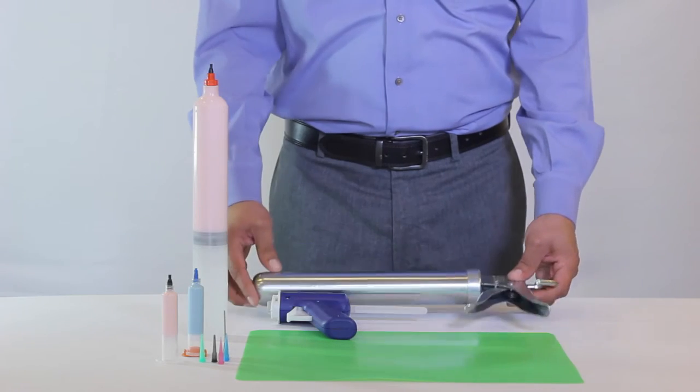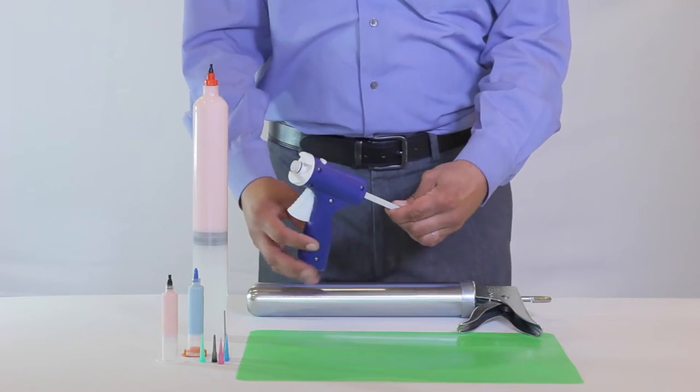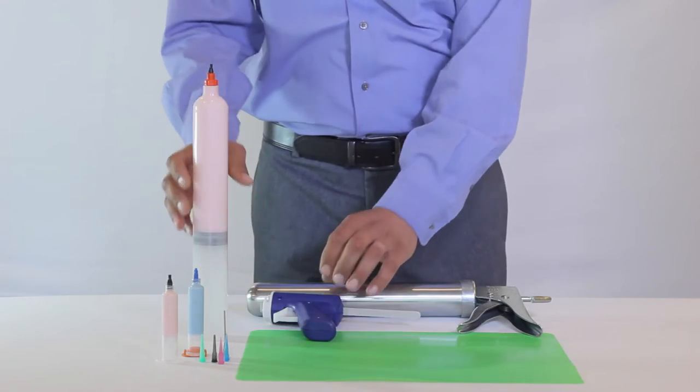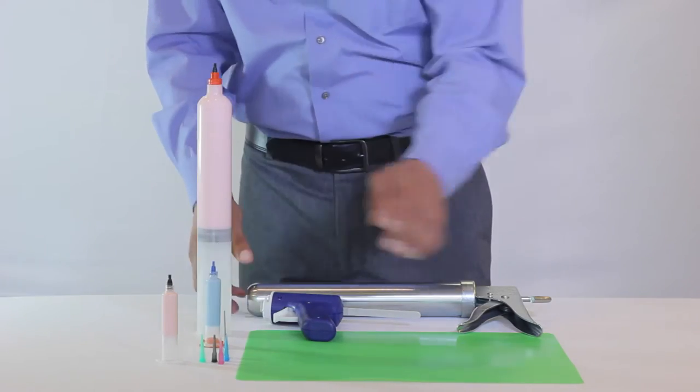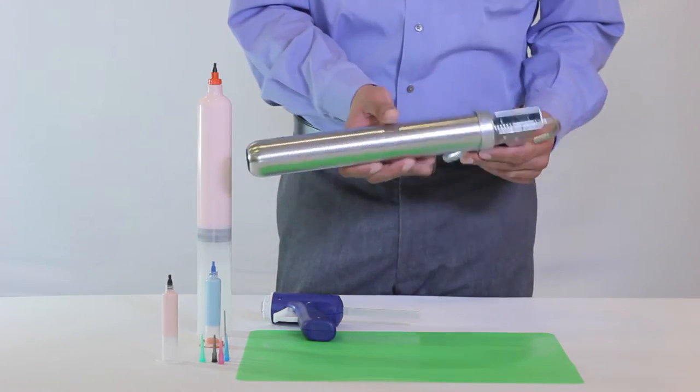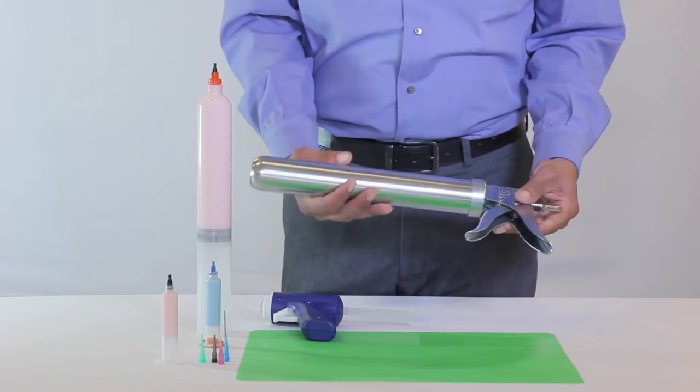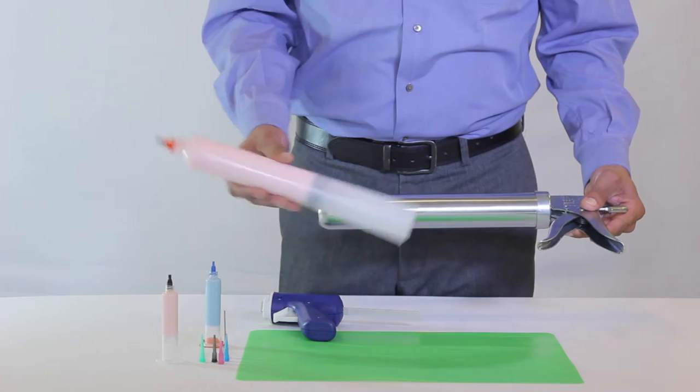In this video, we will be featuring two of Jensen Global's most popular manual dispensing guns, which operate with pre-filled cartridges and air syringes. This is our manual 12-ounce cartridge gun which accepts a 12-ounce pre-filled cartridge that may contain material such as silicone sealant.